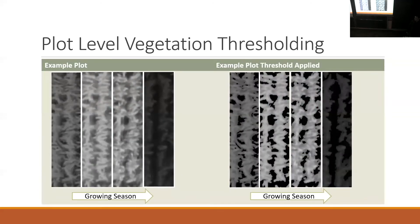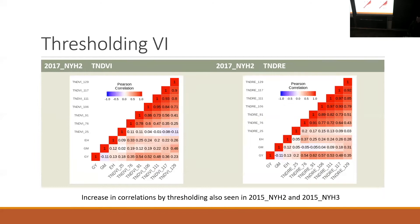To try to improve these correlations, we can try thresholding out the soil or any kind of background. The threshold I applied was just to drop the lowest 25% of pixels. Visually, it looks to be doing what was intended. Calculating these same indices on the thresholded images improves the correlation — in NDRE, we see 0.6 at 91 days after planting.